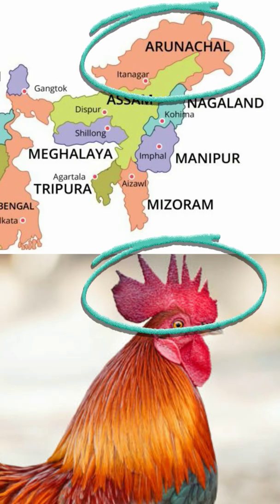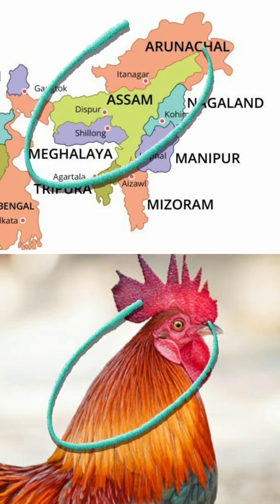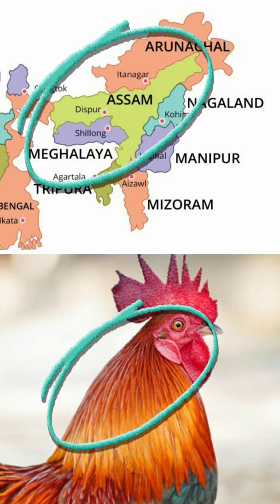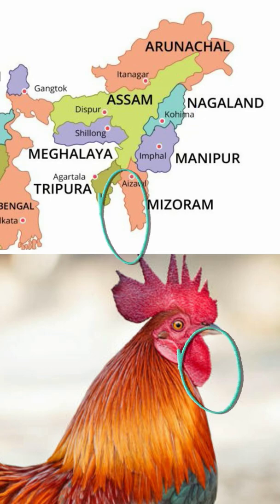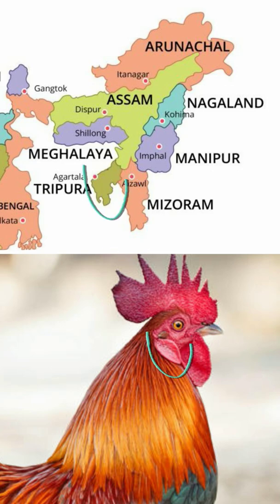The comb of the rooster is Arunachal Pradesh. The head of the rooster is Assam. The state under the beak is Nagaland. There are two states hanging like a rooster wattle — the longer one is Mizoram and the shorter wattle is Tripura.